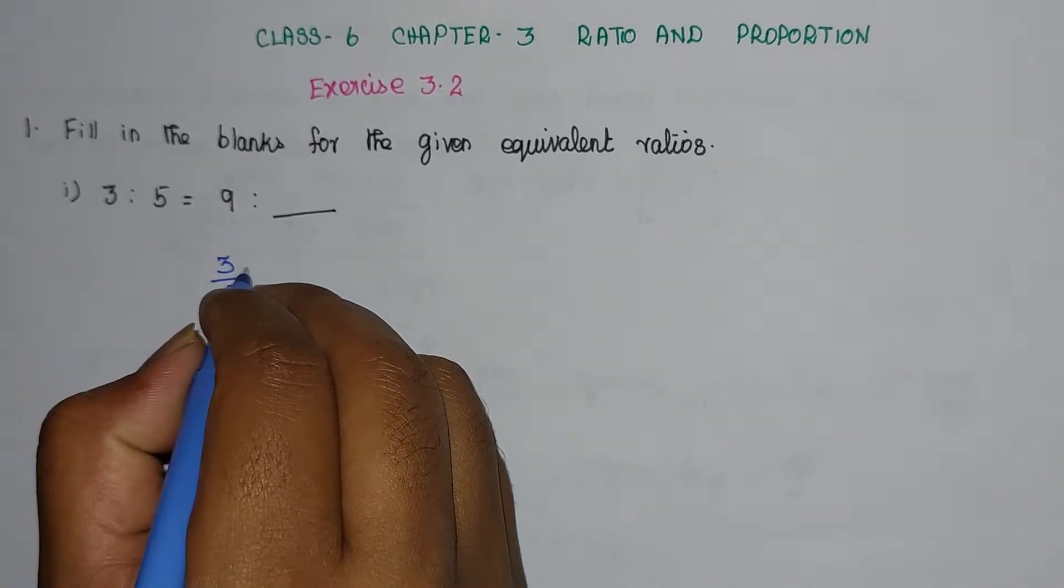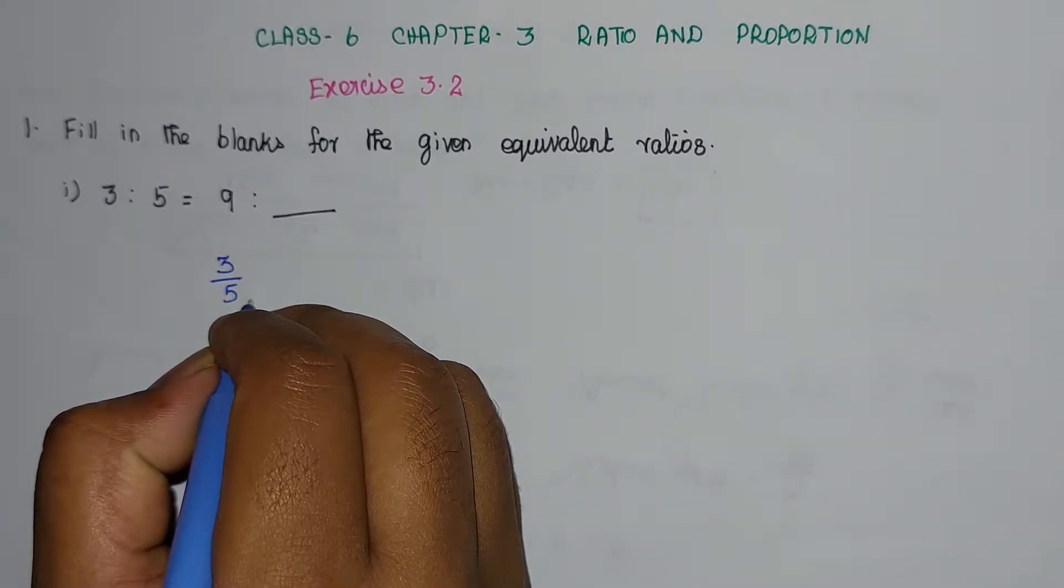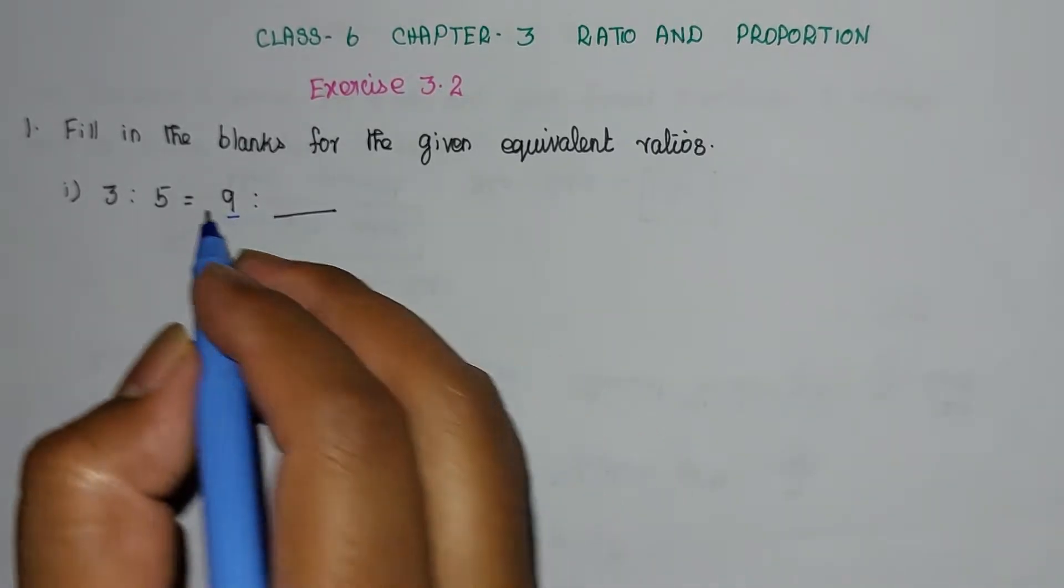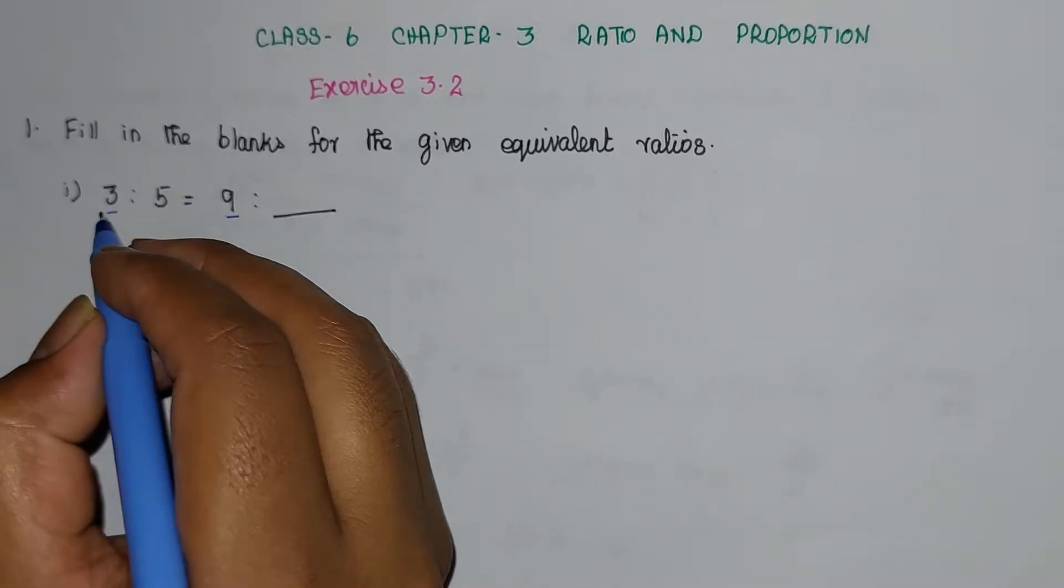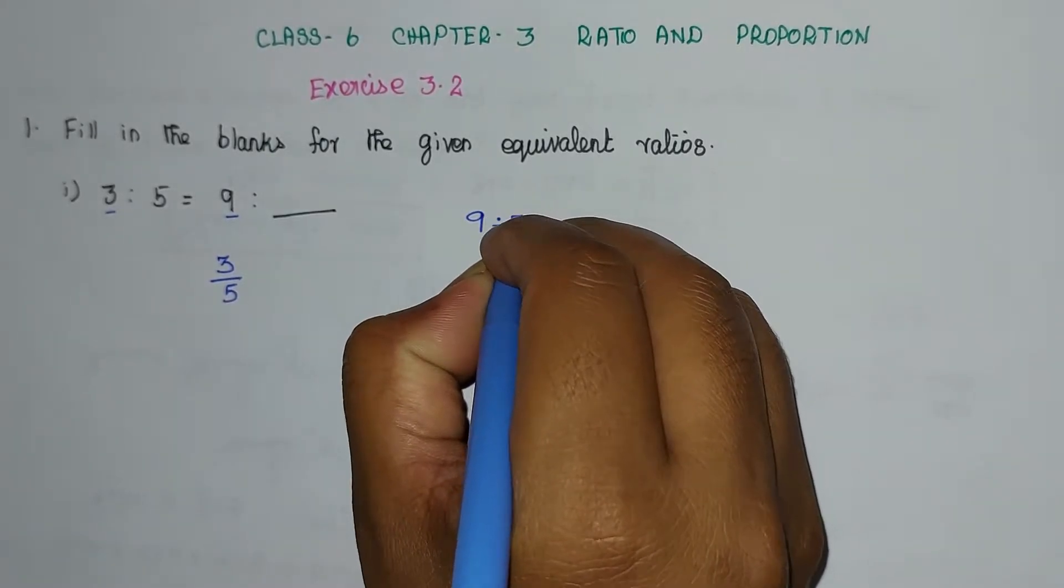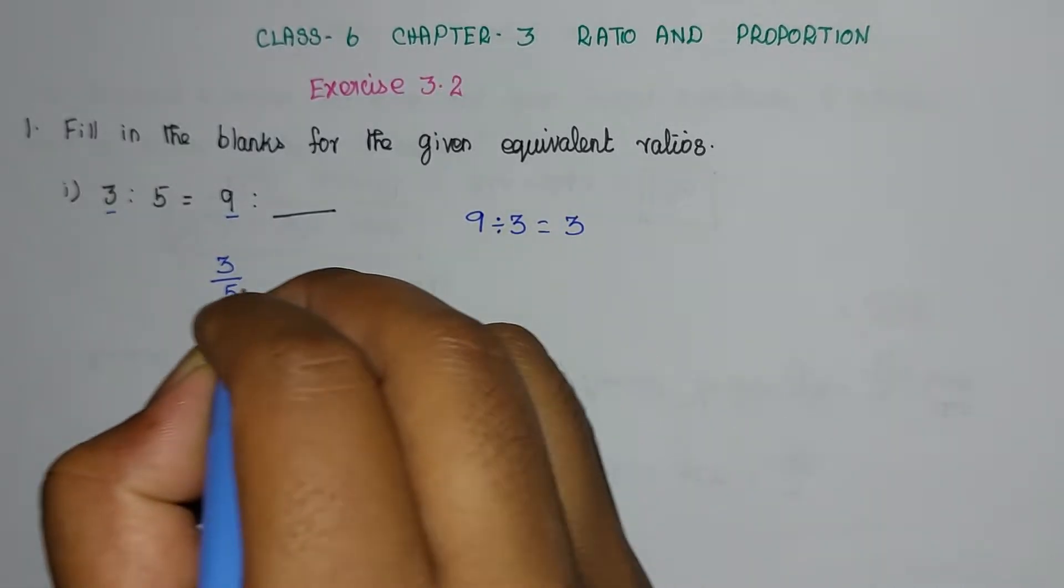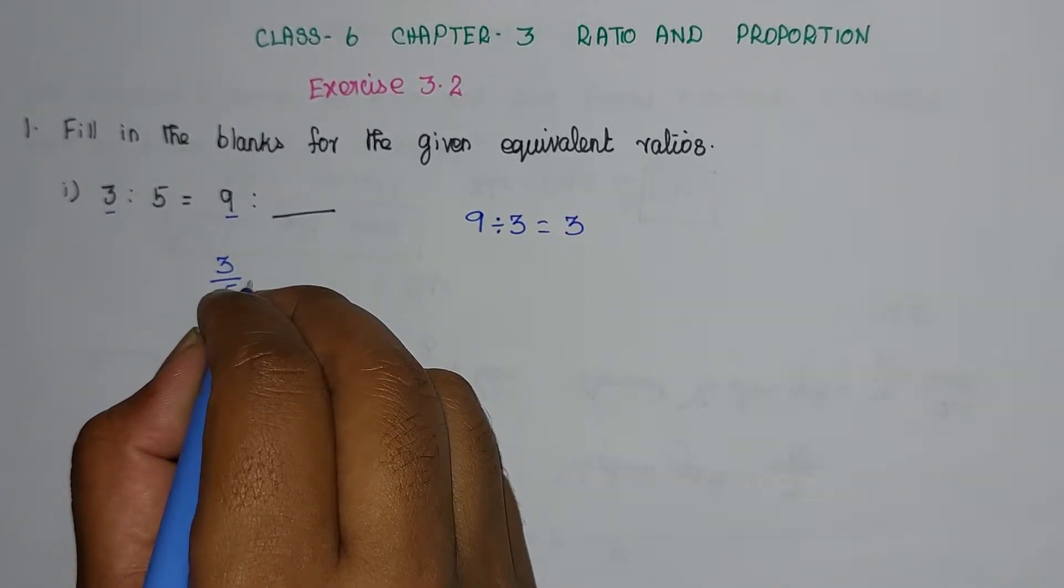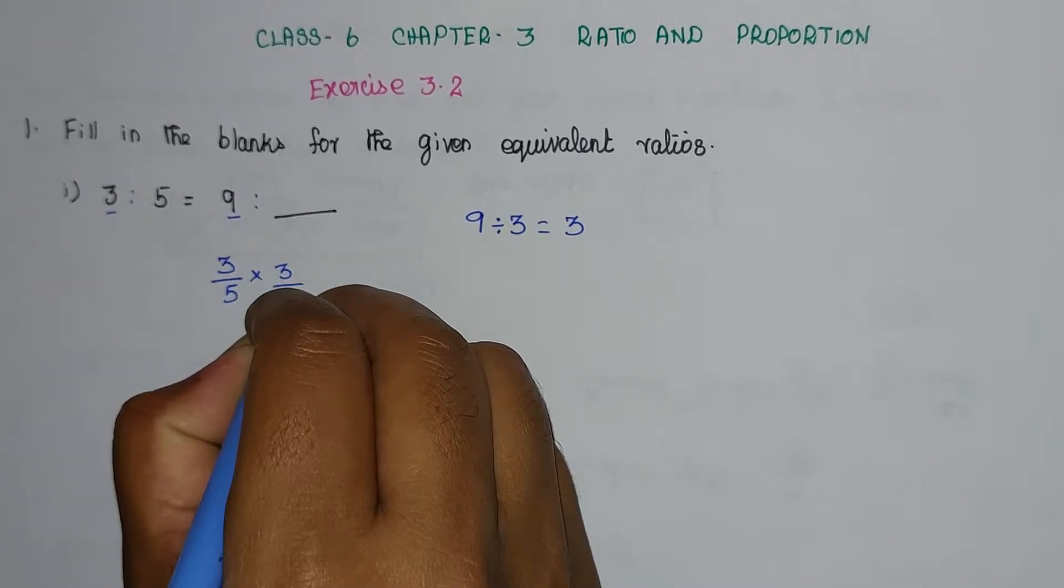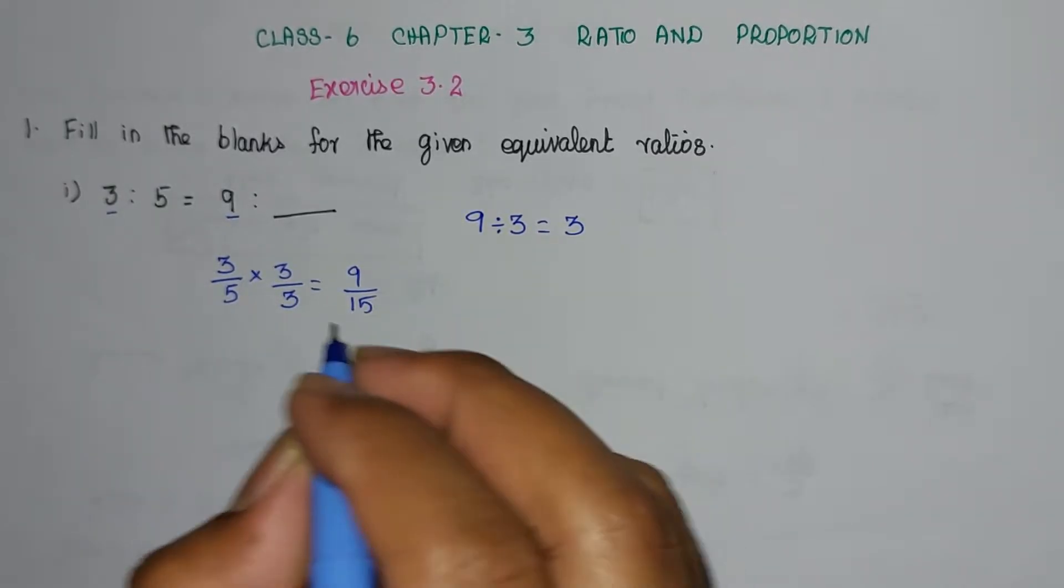So we multiply numerator and denominator by the same number. The numerator is 9, we divide by the left side numerator. 9 divided by 3, the answer is 3. So we multiply 3 by 3 and 5 by 3. Now what is 9 by 15? The answer is 15.